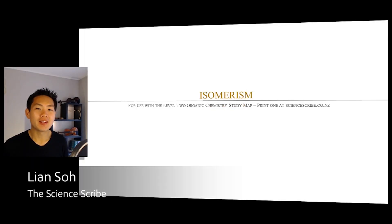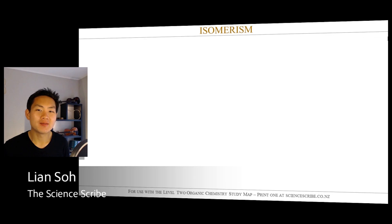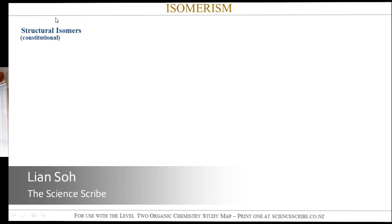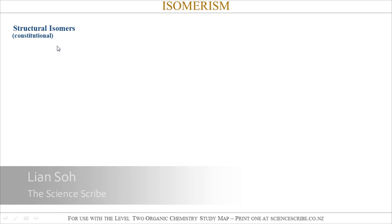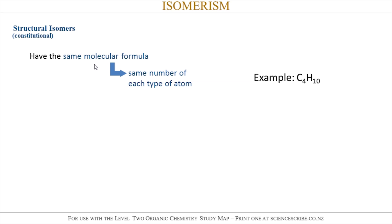In CAA Level 2 organic chemistry, we're going to be looking at isomers. You have two types of isomers that you're going to be looking at. The first one is structural isomers. Structural isomers all have the same molecular formula, which means if you have two molecules which are structural isomers of each other, they will have the exact same number of each type of atom.